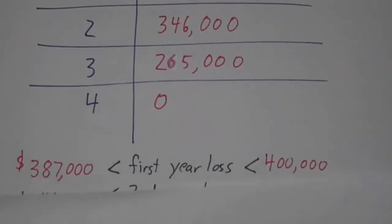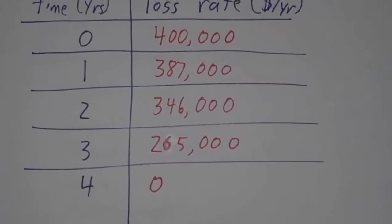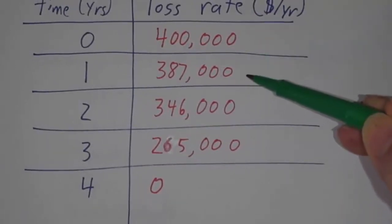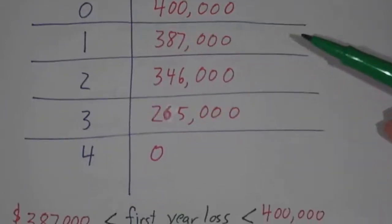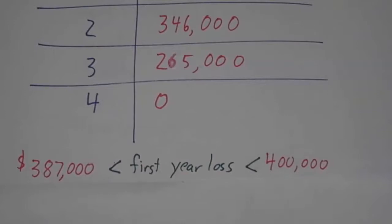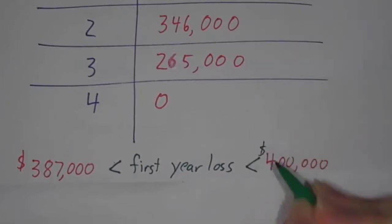In the first year, it was losing at $400,000 at the beginning of the year and $387,000 at the end of the year. So the amount of money it lost is somewhere between $387,000 and $400,000.